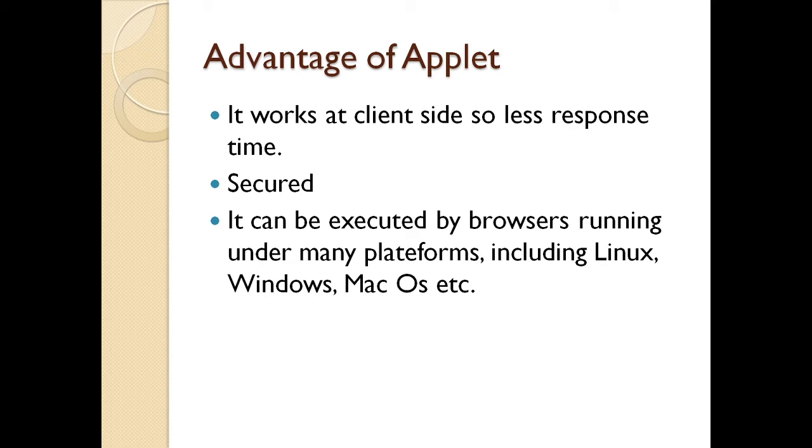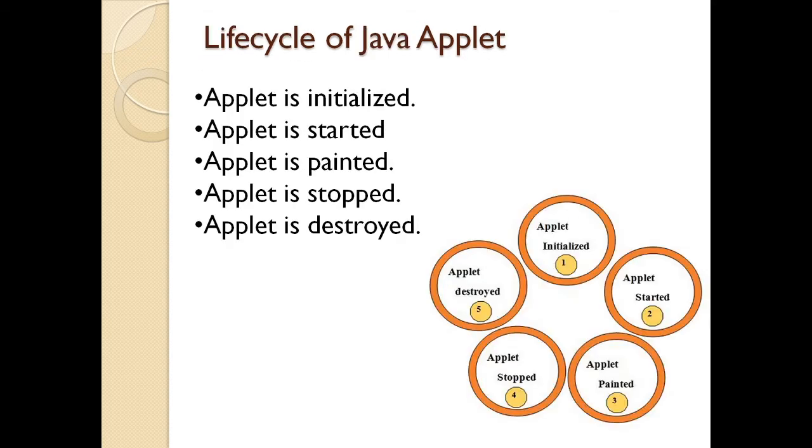Now, let's see the life cycle of an applet. In life cycle of an applet, the applet is first initialized with the init method. Then, the second stage is applet is started with the run method. And the third is applet is painted. So, if I want to paint the applet, the applet has to go to this stage and with the paint method, we can run the applet.